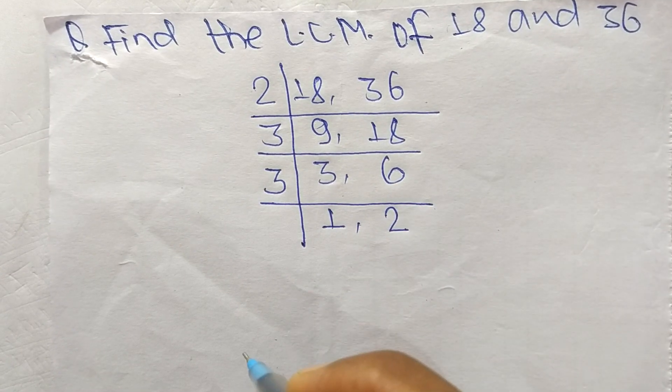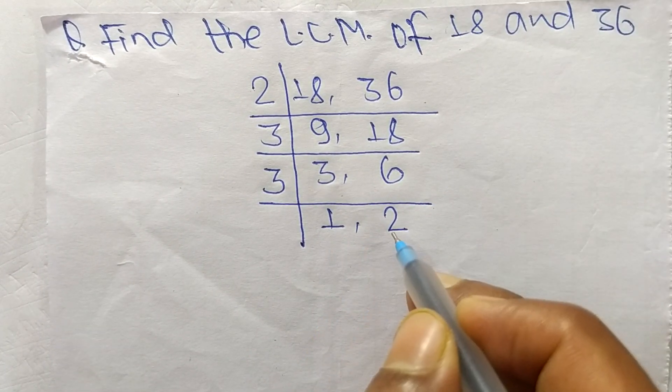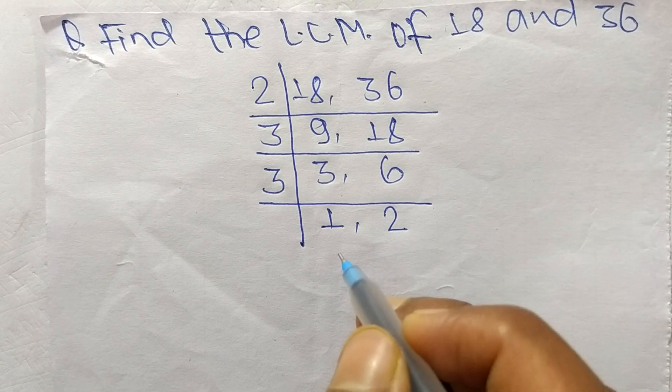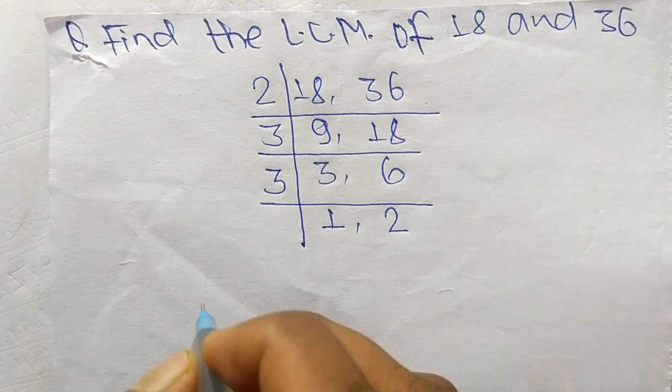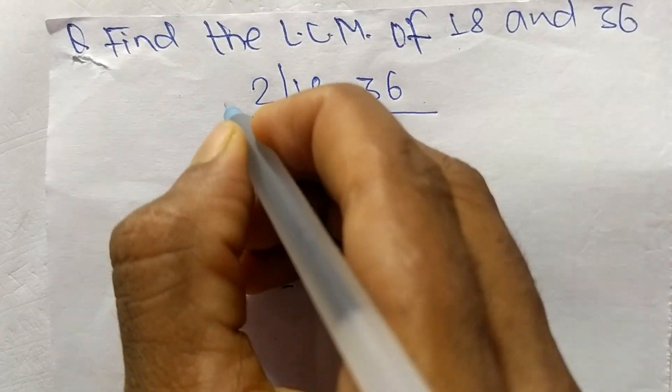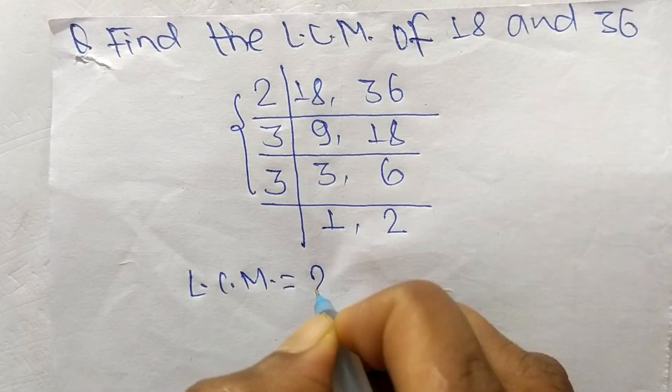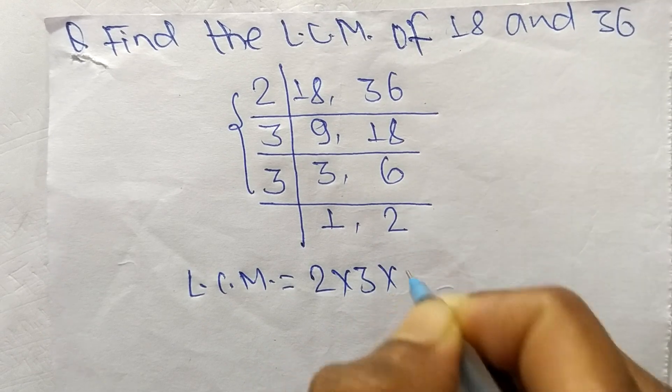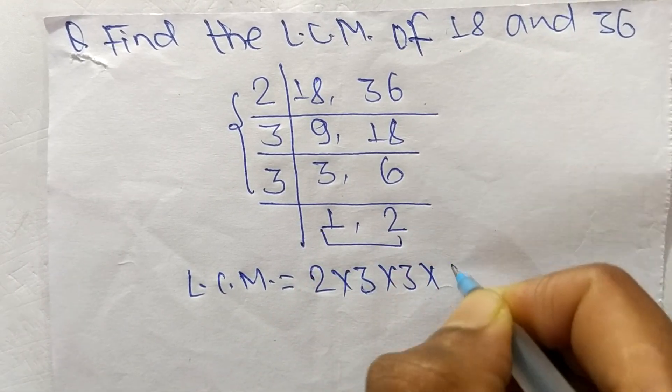At last we have 1 and 2, which are not exactly divisible by the same number. So the LCM is equal to 2 times 3 times 3 times 1 times 2.